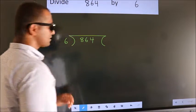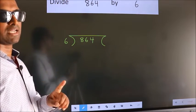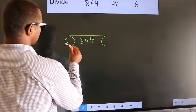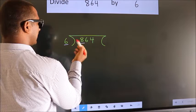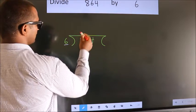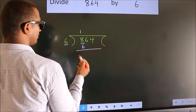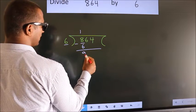This is step 1. Next, here we have 8, here 6. A number close to 8 in the 6 table is 6 ones, which is 6. Now we subtract. We get 2.